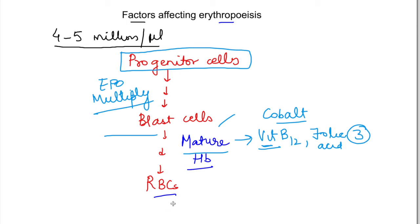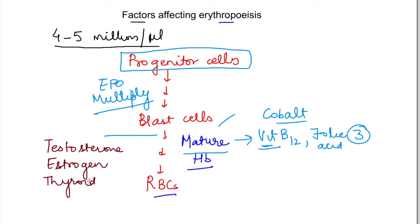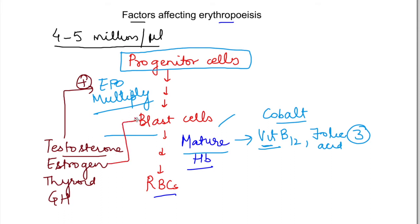Besides raw materials, some hormones also affect erythropoiesis. These hormones are testosterone (a male hormone), estrogen (a female hormone), thyroid hormone, and growth hormone. Testosterone increases erythropoiesis — it basically causes more erythropoietin to be secreted, so erythropoiesis is stimulated. Estrogen inhibits or reduces erythropoiesis by reducing the survival of blast cells, so RBCs are reduced.